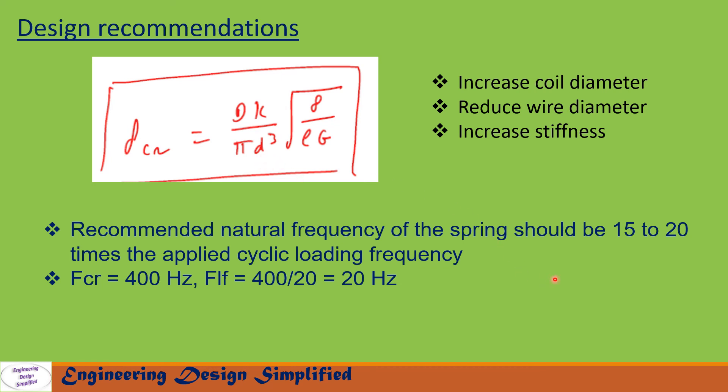Recommended natural frequency of the spring should be 15 to 20 times the applied cyclic loading frequency. For example, if f_cr is calculated as 400 hertz, then loading frequency can be written as 400 divided by either 15 or 20. 20 is what I prefer.